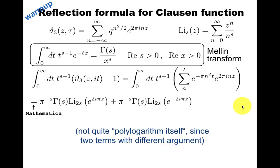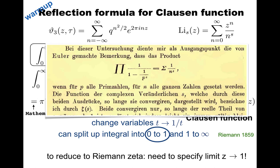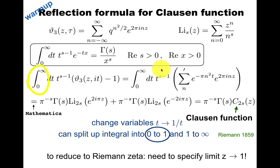This is not really an integral representation of the polylogarithm itself, because the two terms have a different argument, but it can be thought of as an integral representation for the Clausen function. In other words, you can think of this integral for any complex s. In Riemann's original paper, as I said, he has z equal 1, but what he did is he then split up the integral into 0 to 1 and 1 to infinity, and used this transformation property of the theta function.